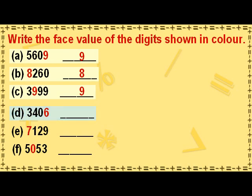The face value of 6 in the ones place is 6. The face value of 7 in the thousands place is 7. The face value of 0 in the hundreds place is 0.